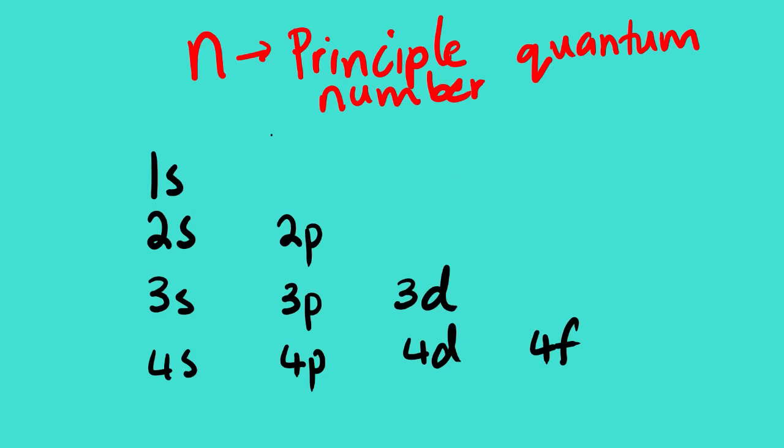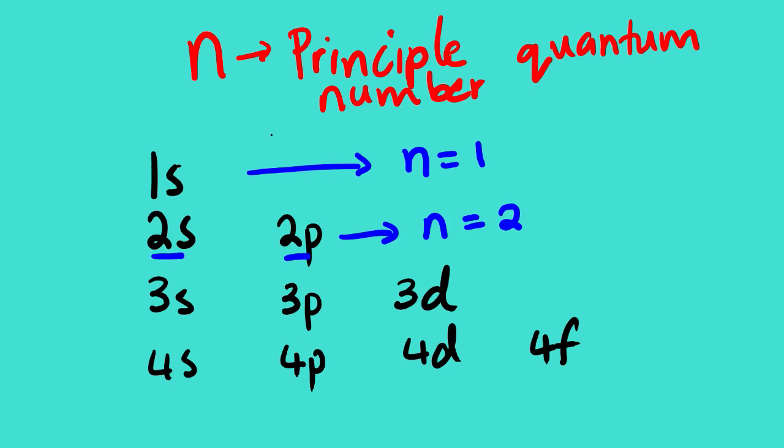Our first quantum number, N, is the principal quantum number. It explains the energy level. From the previous lesson videos, you should be familiar with this diagram. The first energy level is 1S, where N equals 1. The second energy level consists of 2S and 2P. The first energy level consists of only 1S.